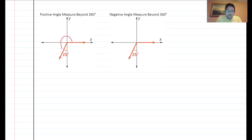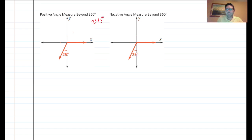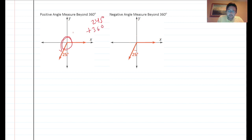For the positive angle beyond 360: we know the angle is 245 degrees, so we add one full circle — 360 degrees. That gives 245 plus 360 equals 605 degrees.